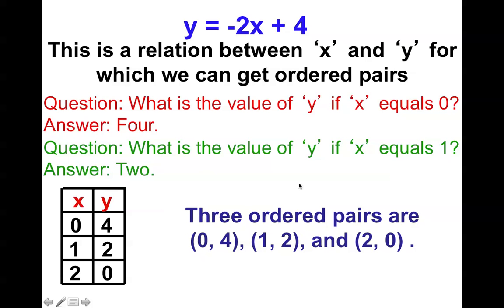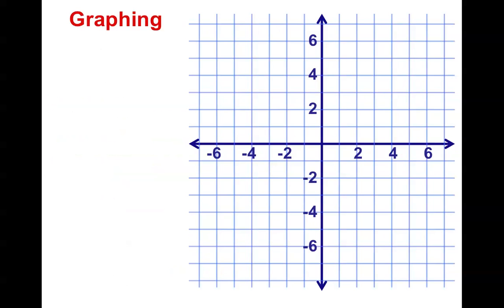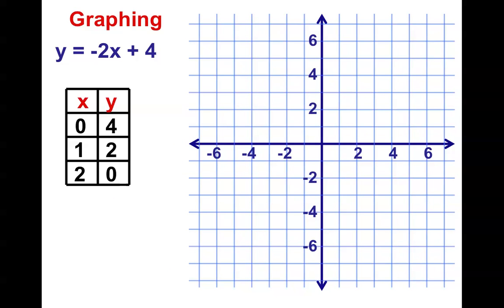These can be written as ordered pairs, where we have the x-coordinate and the y-coordinate. And what can I do with these ordered pairs? I can graph them. If I graph these points on a line, notice there's 0, 4. There's 1, 2. And there's 2, 0. I hope you notice that these points line up. So this equation right here represents this straight line.